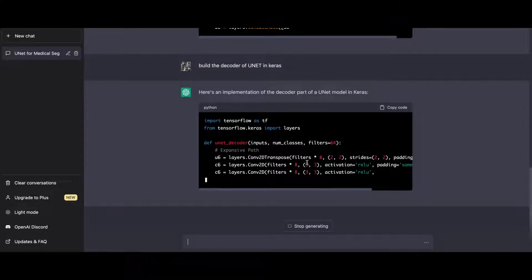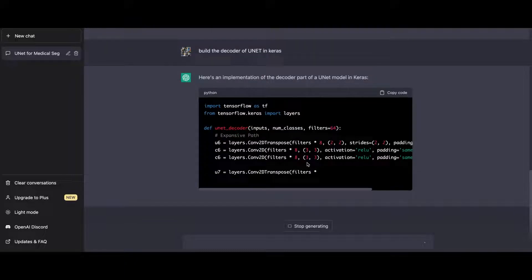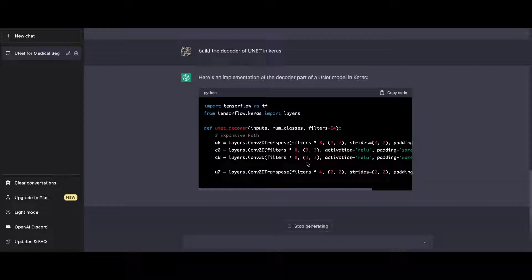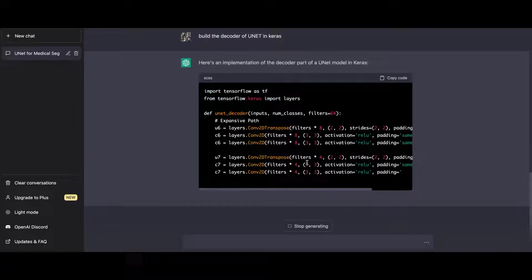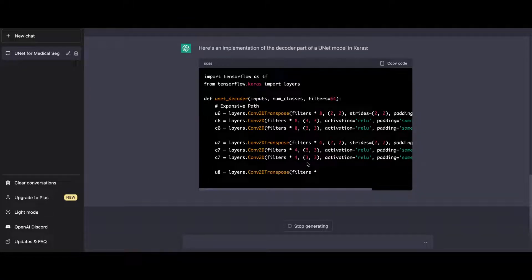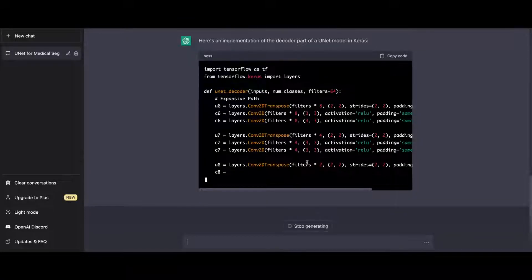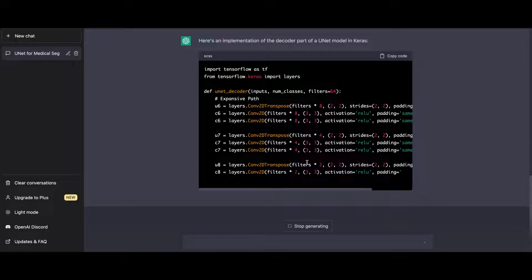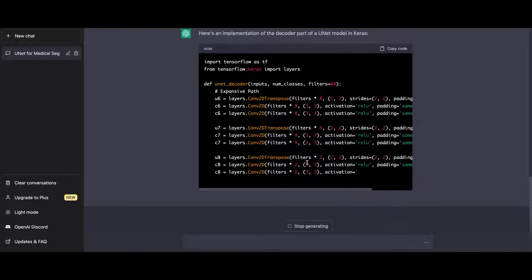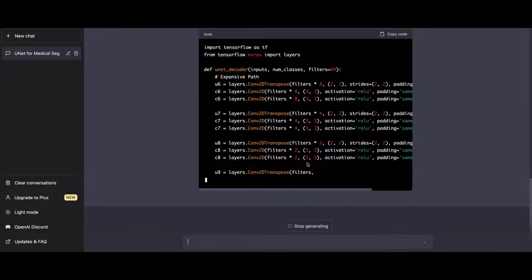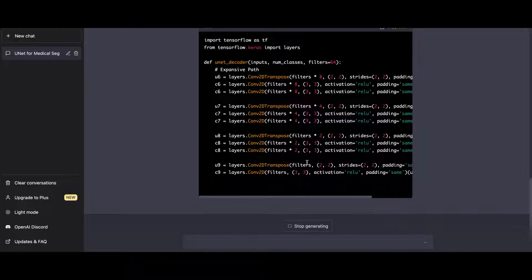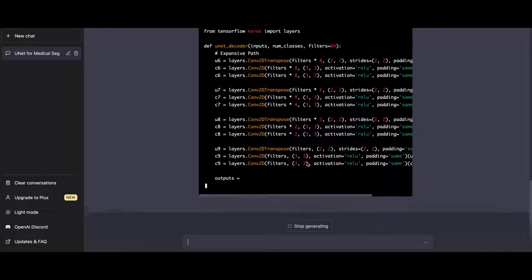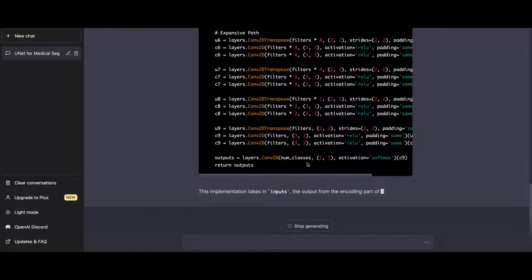One thing you have to remember is that it also uses skip connections here. Basically, there are three inputs here, right? One is the input, the receiving input, the input of the skip connection, and the number of filters in the particular building block. The implementation takes in the inputs, the output from the corresponding encoding part of the UNET, and the number of classes, which is the number of classes to segment in the image. The number of filters can also be adjusted with the filters argument. ChatGPT gave us a great example.